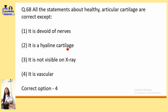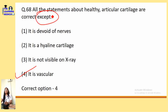All of the following statements about healthy articular cartilage are correct EXCEPT — it is devoid of nerves, it is hyaline cartilage, it is not visible on X-ray, and it is vascular. The correct option is 'it is vascular' — articular cartilage is avascular. So the statement 'it is vascular' is incorrect.